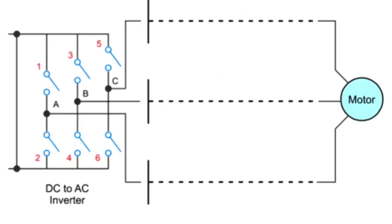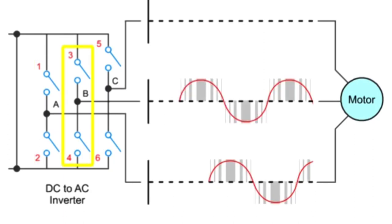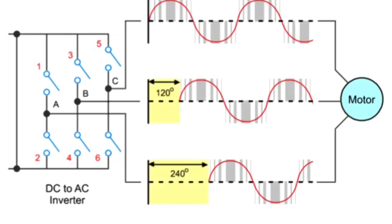In a three-phase driver, the sine waves produced by each pair of inverter switches are 120 degrees out of phase to ensure efficient operation of the motor.